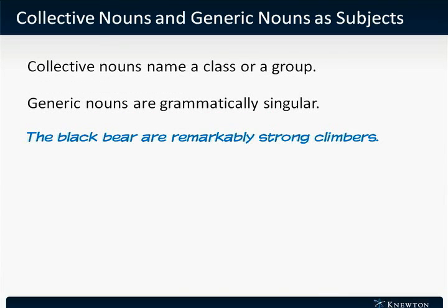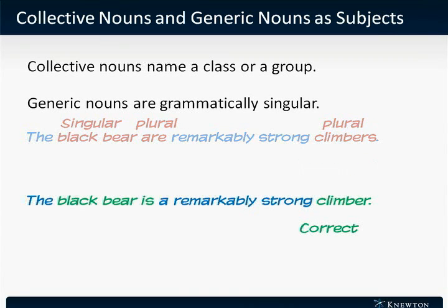Generic nouns are grammatically singular. This sentence, "The black bear are remarkably strong climbers," isn't talking about a particular bear, but some member of the group, the black bear. Nonetheless, because we're only talking about one typical bear, we treat this as a singular noun, and it should take the singular verb and a singular predicate noun. "The black bear is a remarkably strong climber" would be the correct way to write this sentence.